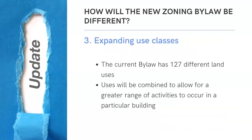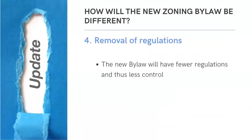The new zoning bylaw will also expand those use classes. The current bylaw has 127 different land uses. By combining the uses, it will result in groups of broader categories, which will allow for a greater range of activities to occur in a particular building. And finally, the new bylaw will have fewer regulations and thus less control. Overall, the new bylaw will create a much more permissive environment for development in the city.